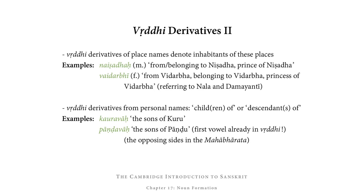Vṛddhi derivatives from personal names refer to the children or descendants of that person. In the Mahābhārata, the two opposing sides — the sons of Kuru and the sons of Pāṇḍu — are referred to as the Kauravāḥ and the Pāṇḍavāḥ. Note that not only is the first vowel in vṛddhi, but the final u of Kuru and Pāṇḍu has been changed so that we now have an a-stem. In Pāṇḍu the vowel already is in vṛddhi, so there is no way of strengthening it further; instead, the word end changes from u to -ava.